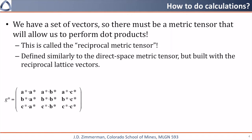G star will be the tensor given by a-star dot a-star in the first position, a-star dot b-star in the second position, and on and on throughout the rest of the matrix.